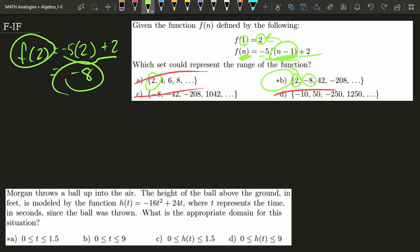So for the bottom problem, Morgan throws a ball in the air, and what goes up must come down. And the height of the ball above the ground is given by the following function H of t, so the height at time t, is given by this formula, where t represents the time in seconds since the ball was thrown. What would be the appropriate domain for this situation? In other words, what is the appropriate horizontal distance for this to make sense?